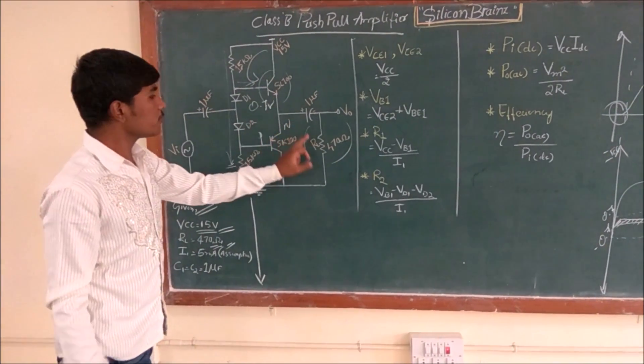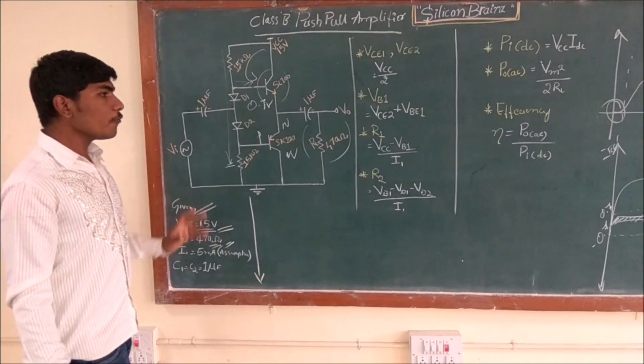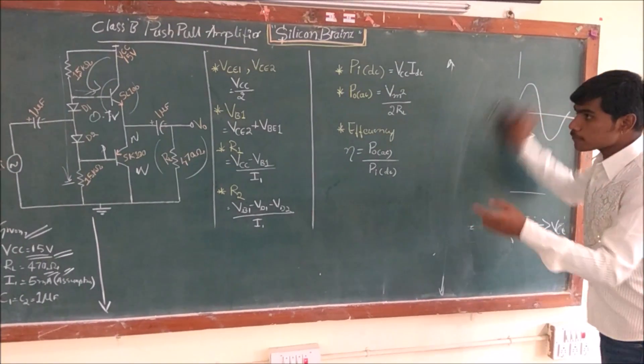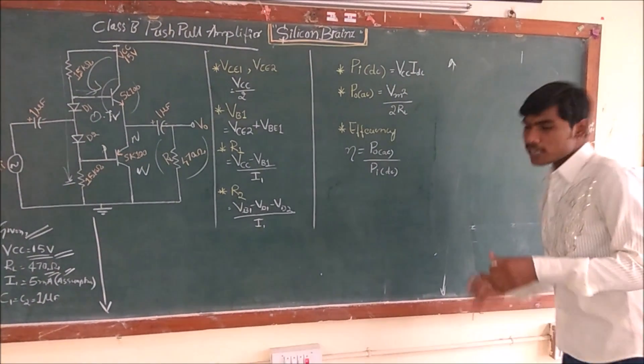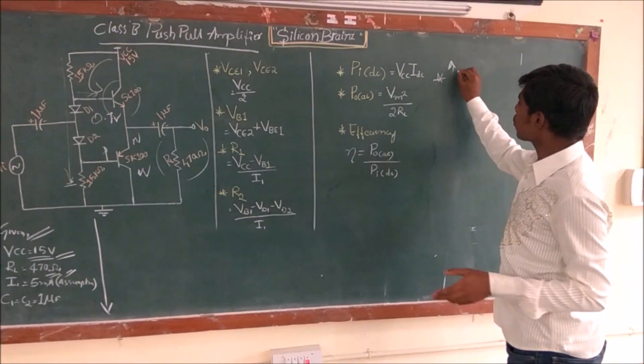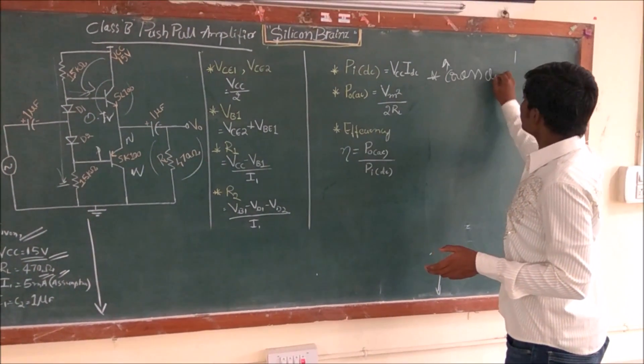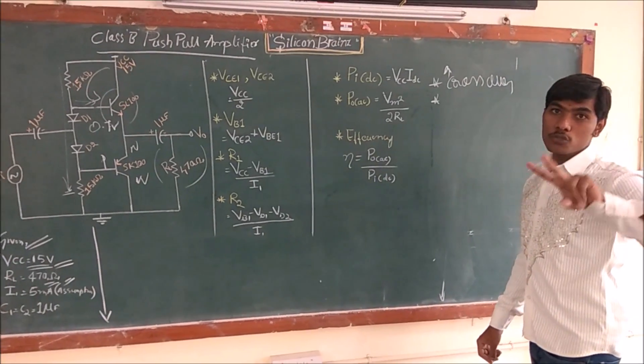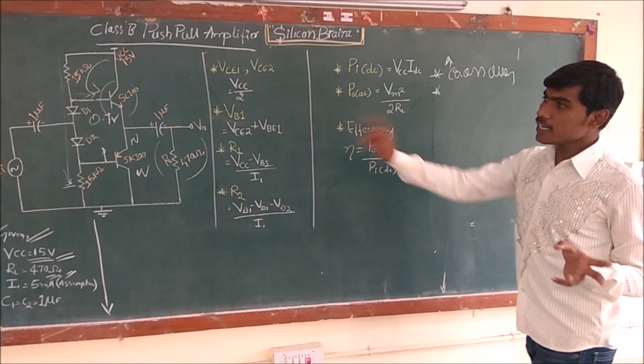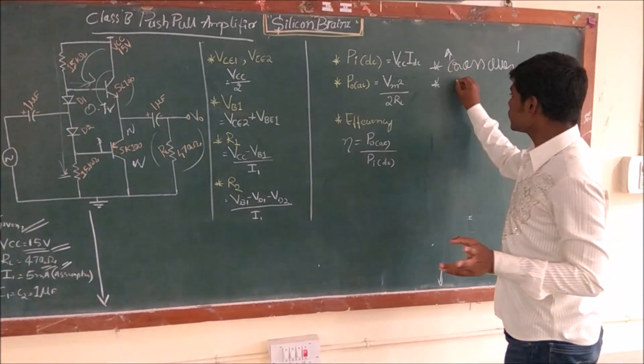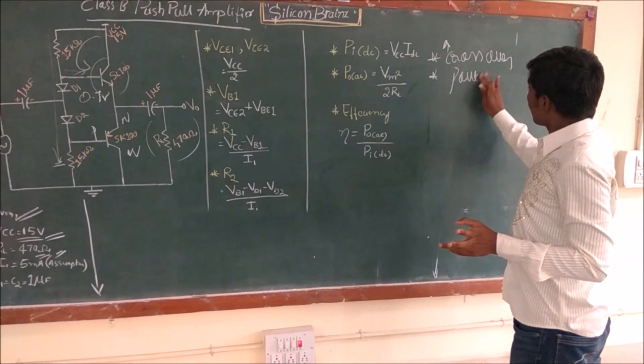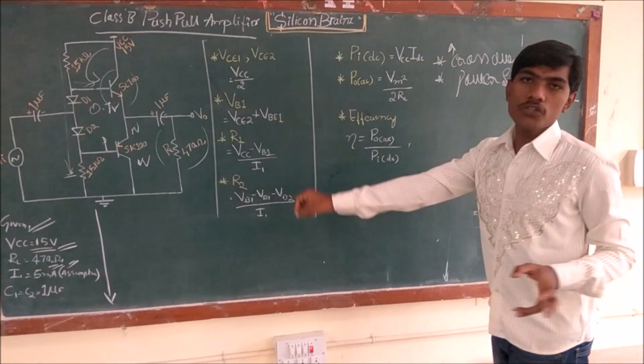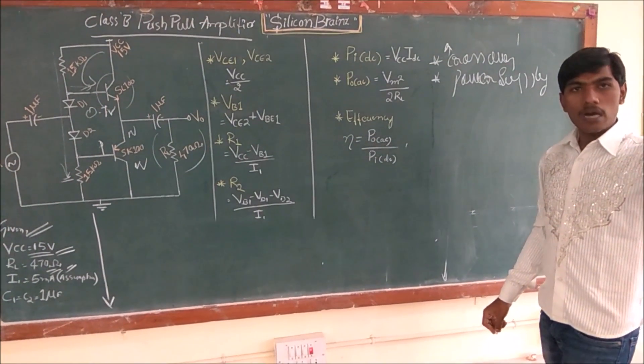One more thing: this avoids two power supply. Let me explain the advantages of this circuit. The first advantage: it avoids crossover distortion. The second: in push-pull we used two power supplies, positive and negative, but here it's a single power supply.